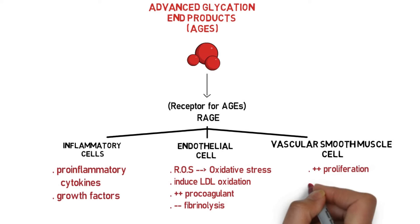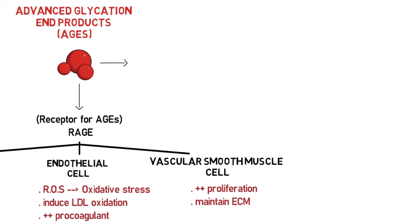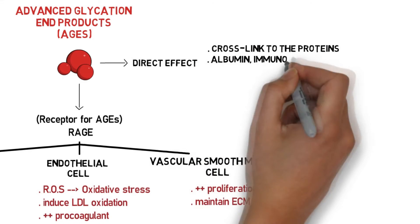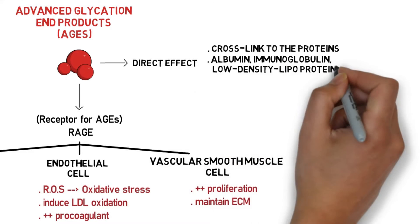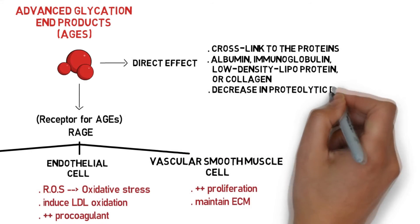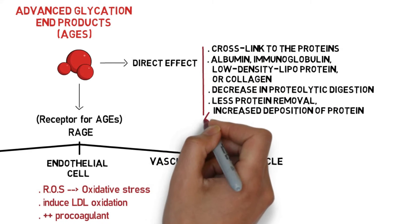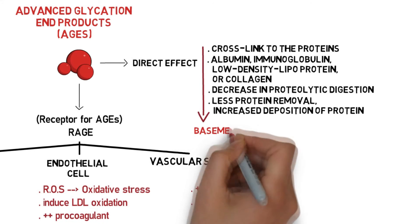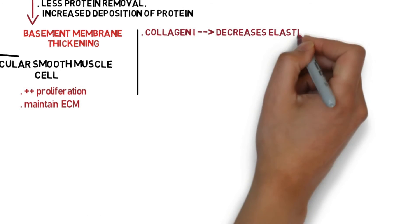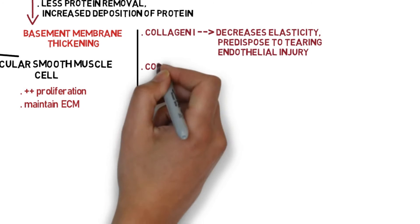AGEs also increase proliferation of vascular smooth muscle cells to maintain the extracellular matrix. Additionally, AGEs can directly cross-link to proteins like albumin, immunoglobulin, low-density lipoprotein, or collagen at the basement membrane, decreasing proteolytic digestion by enzyme activity. This results in less protein removal and increased deposition of glycated collagen, along with trapped elements causing basement membrane thickening. If AGEs cross-link with collagen type 1 in large vessels, elasticity decreases and predisposes them to tearing, leaving endothelial injury.